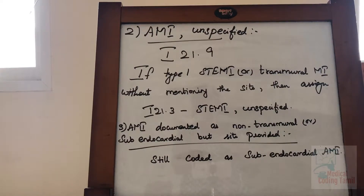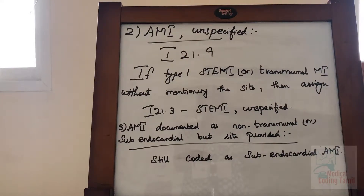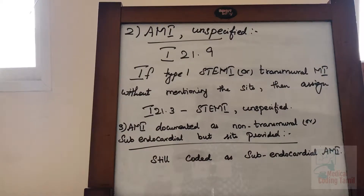The next topic is AMI documented as non-transmural or sub-endocardial, but the site is provided. In this case, the AMI should still be coded as sub-endocardial AMI.